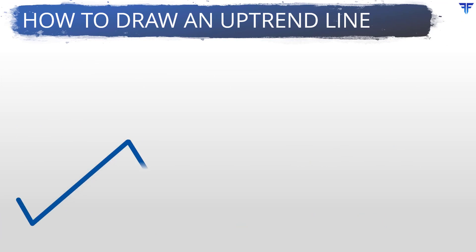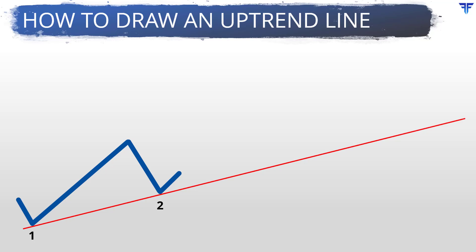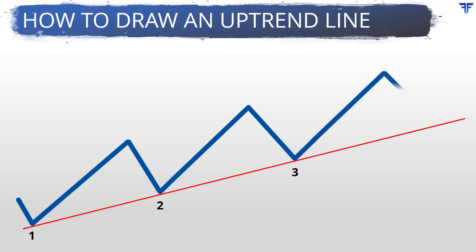Let us explain how to draw an uptrendline using the example of a hypothetical chart. Observe the two lows numbered 1 and 2. Once the price bounces notably off the second low, it can be assumed that a tentative low is in place. An uptrendline can then be drawn connecting each of these two lows and projected into the future. Later, at point 3, see how the price took support near the vicinity of this uptrendline and bounced right off it. This bounce confirms the validity of the uptrendline. Once confirmed, you can expect that uptrendline to act as a future area of support so long as the price remains above it.